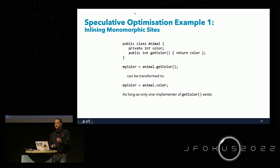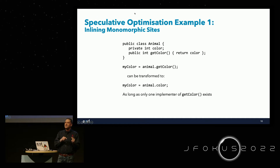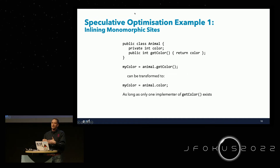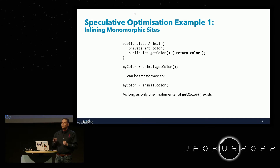This inlining optimization only works if we have one implementation of getColor(). Java as a language is dynamic in the sense that you can load classes at runtime — we could load a subclass of Animal that overrides getColor() and changes what that method does. The compiler would then have to change how it optimized the code. But we can handle this at runtime with JIT compilation, not with static compilation. This is a speculative optimization — we speculate that we won't have a different implementation of getColor().